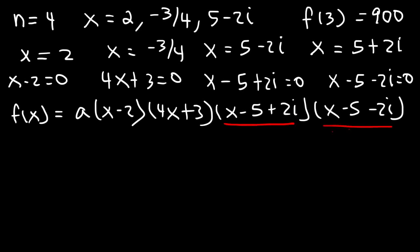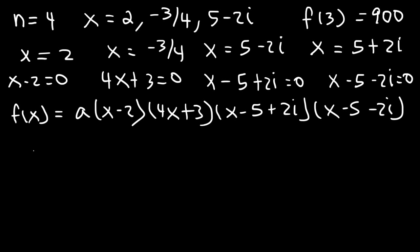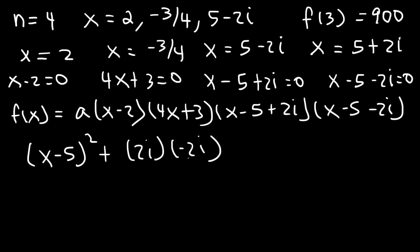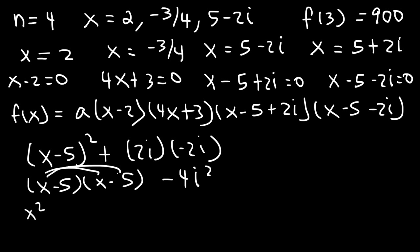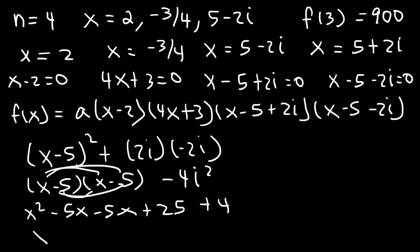Let's begin by FOILing the two complex expressions. A simplified way to FOIL them is that x minus 5 plus 2i times x minus 5 minus 2i equals x minus 5 squared plus 2i times negative 2i. That gives x squared minus 10x plus 25, plus negative 4i squared. Since i squared is negative 1, negative 4i squared is plus 4. So combining, we get x squared minus 10x plus 29.